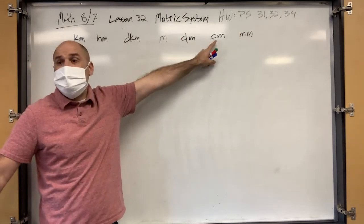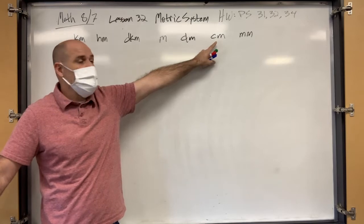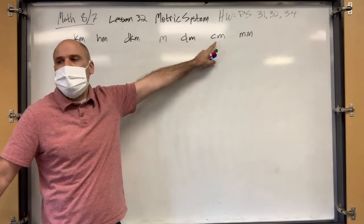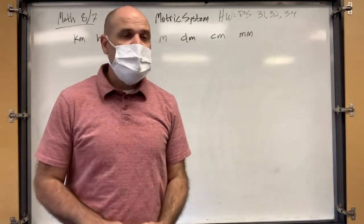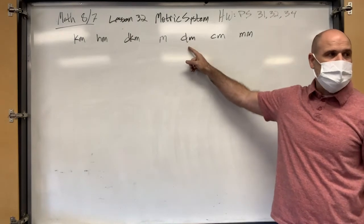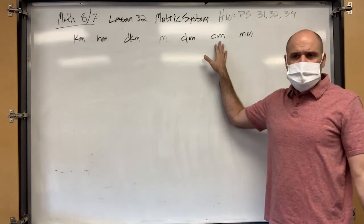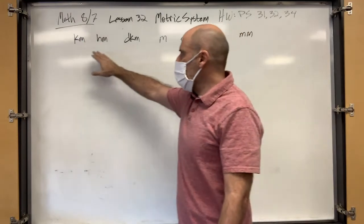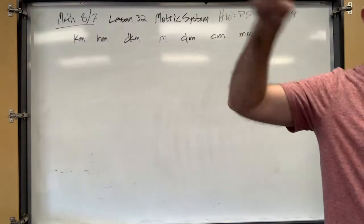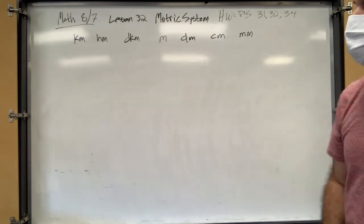What does 'cent' mean? A hundred — a cent is a hundredth of a dollar. So a centimeter is literally a hundredth of a meter. And a kilometer — how many kilometers is that? You're just saying how many thousands of meters. Five kilometers is five thousand meters. Does that make sense?